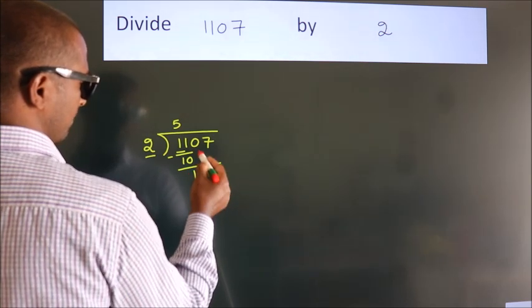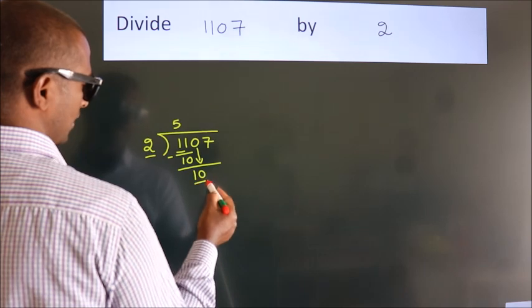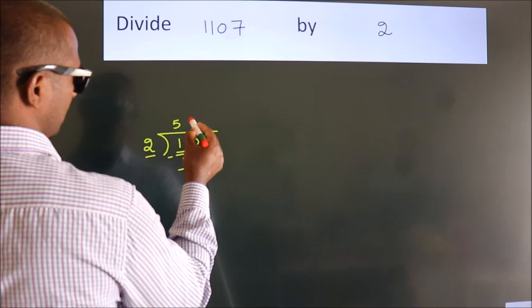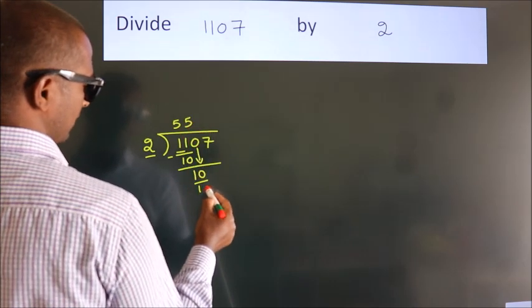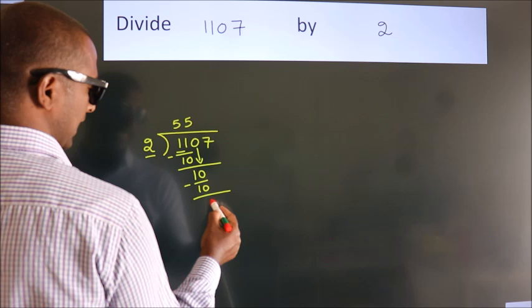After this bring down the beside number. So 0 down. So 10. When do we get 10? In 2 table, 2 times 5 equals 10. Now we subtract. We get 0.